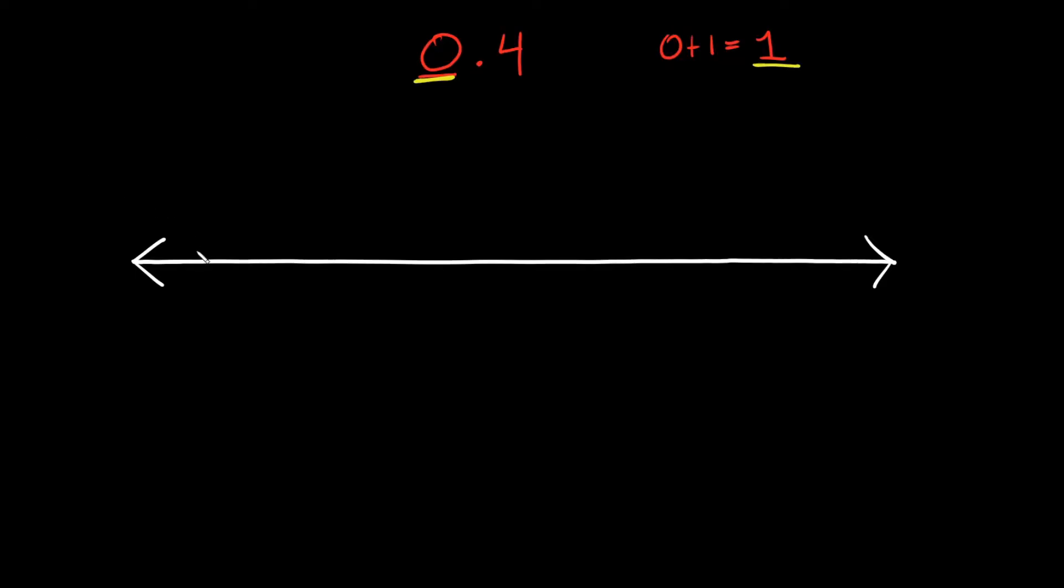So that at least gives me a starting point. We're gonna be somewhere between 0 and 1. Now what's the next step? Well all you have to do is look at your decimal number right here and figure out which place value it is in. So this 4 right here is in the tenths place. So why is that important? Well because this number right here, the tenths or the ten, tells you how many even spaces you have to split this number line up into.